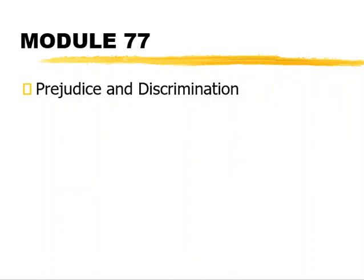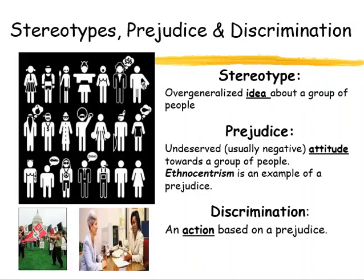Moving into Module 77, this module deals with prejudice and discrimination, looking at stereotypes and how they influence behavior. A stereotype is an overgeneralized idea about a group of people, based on the representativeness heuristic, our experiences, or our social schemas. Sometimes stereotypes lead us to make false claims based on drawing conclusions and using heuristics.